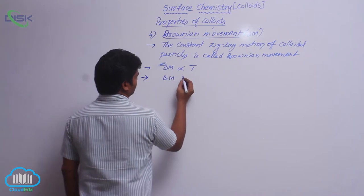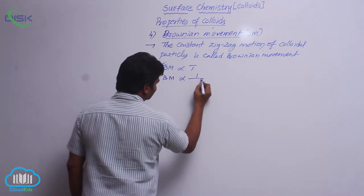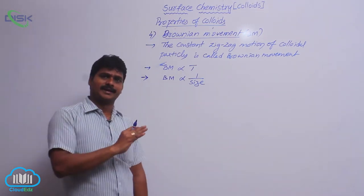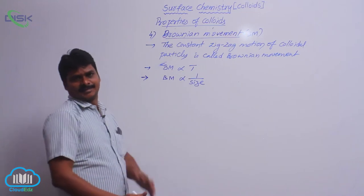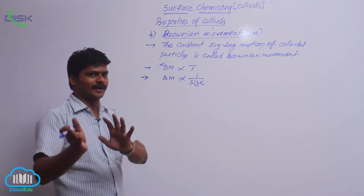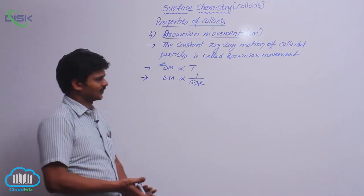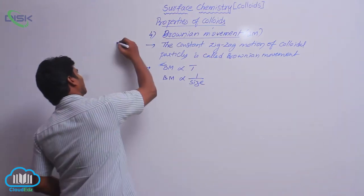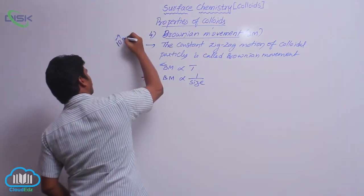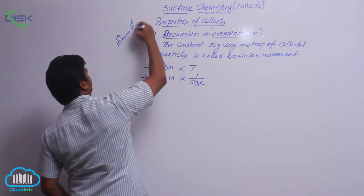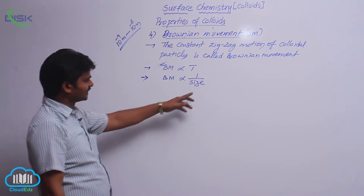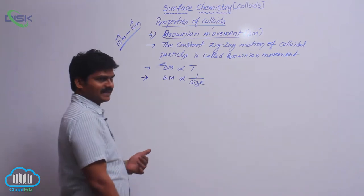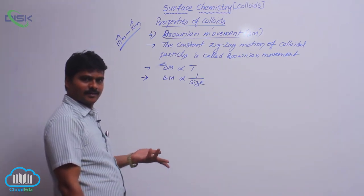How is Brownian movement affected by the size of colloidal particles? Brownian movement is inversely proportional to the size of colloidal particles. Colloidal particles have sizes in the range of 10⁻⁹ meters to 10⁻⁶ meters. If there is an increase in size, Brownian movement decreases.